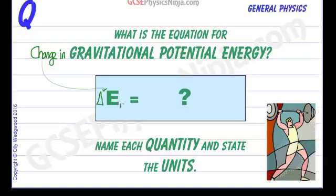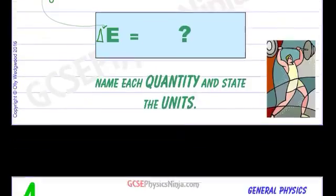So we've got the change in gravitational potential energy, and if you want to, you can also put little p there for potential, but that's up to you. Okay, so we need to name each quantity and state the units, so let's do that.